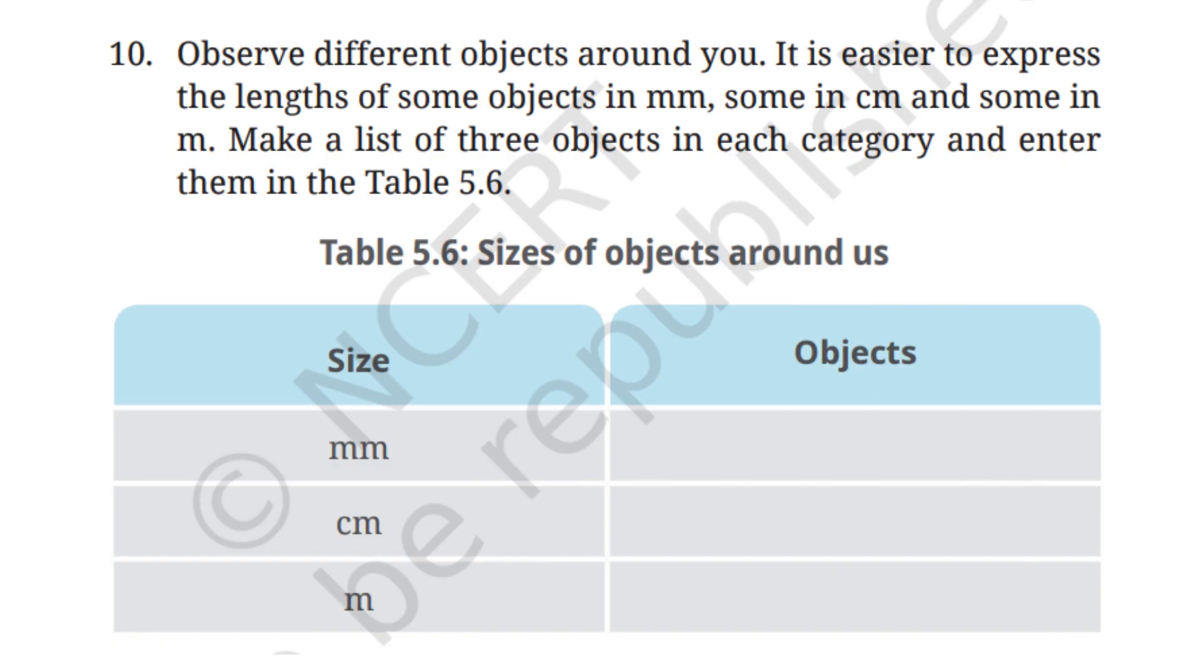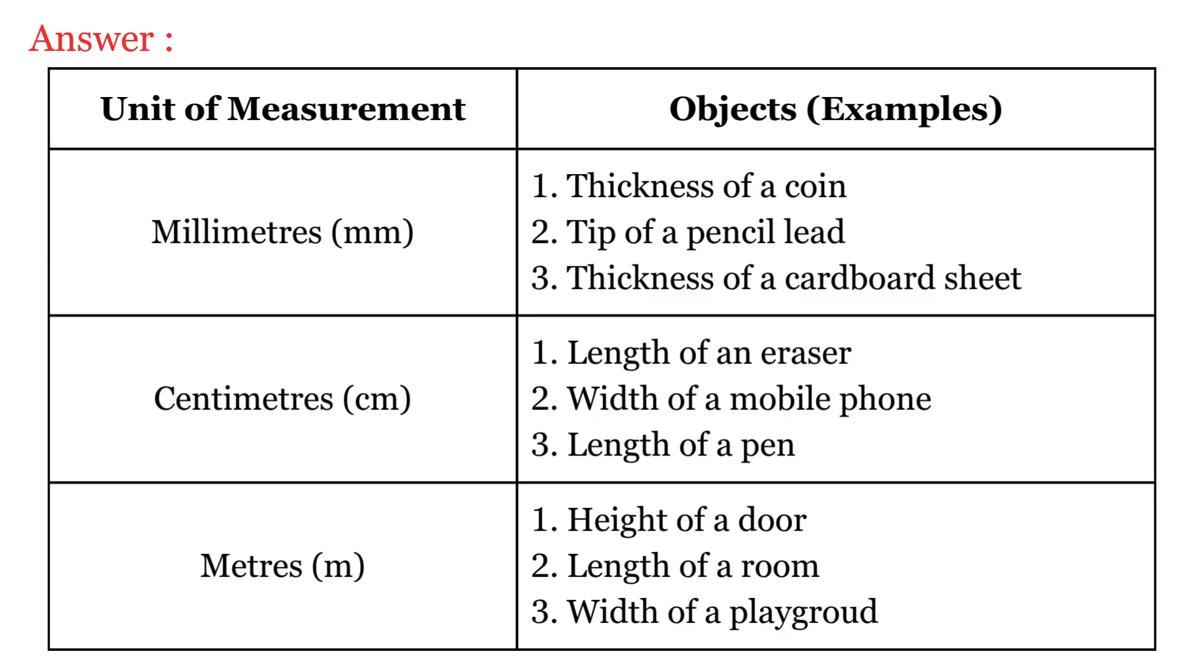Question No. 10: Observe different objects around you. It is easier to express the lengths of some objects in millimeters, some in centimeters, and some in meters. Make a list of three objects in each category and enter them in table 5.6. So some objects around us are best measured in millimeters, especially when they are very small. For example, thickness of a coin, tip of a pencil lid, thickness of a cardboard sheet.